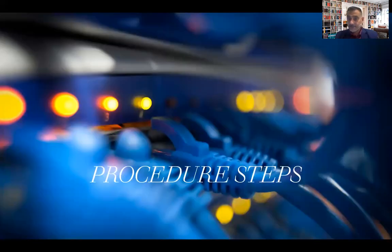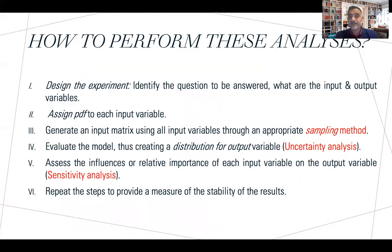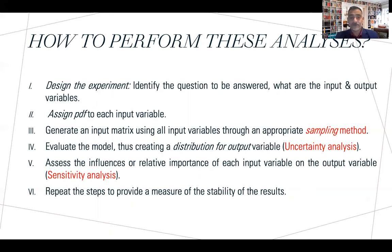The precise steps are: first, design the experiment — identify input and output parameters; second, appropriately assign density functions or distributions to the input variables; third, choose the correct sampling method; fourth, quantify the distribution of output variables due to uncertainty — this is the uncertainty analysis; fifth, rank each input parameter — this is the sensitivity analysis. Repeat this process until you get stable results.